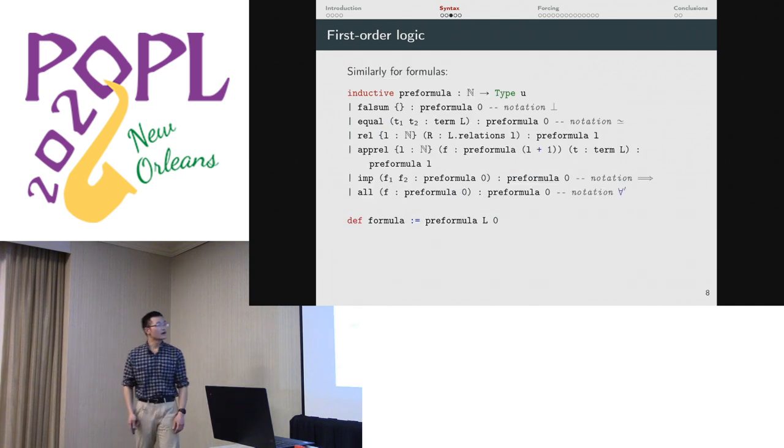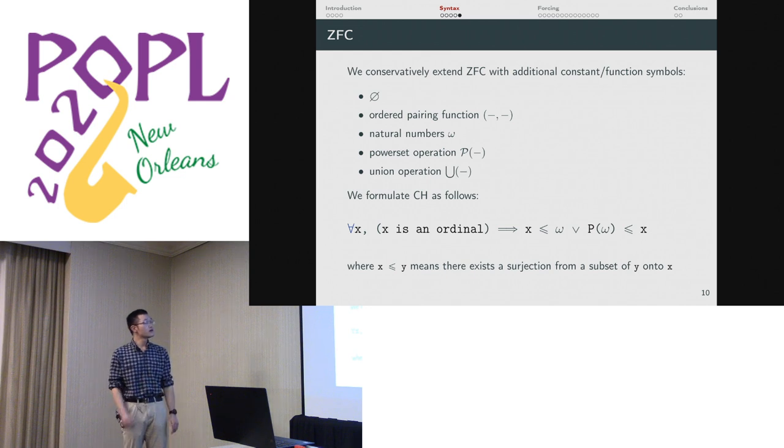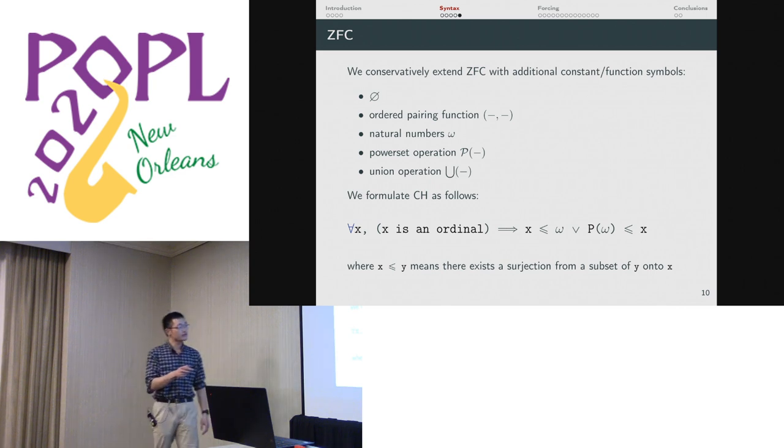We used a similar trick for formulas. To stress test our implementation, we started off with the formalization of the completeness and compactness theorems. We found that our implementation of first-order logic really made those proofs more pleasant than they might have been otherwise. When it came time to write down ZFC, we ended up adding some new function symbols for convenience. These are things that set theorists add on, like, page one of a set theory textbook. You can define them in the language of ZFC, so you just add them in. Once you have these, it becomes rather easy to formulate the continuum hypothesis. You just have to say that something is an ordinal. And you have this less than or equal sign, which means that there exists a surjection from a subset of the set on the right. So that is what CH means to us.